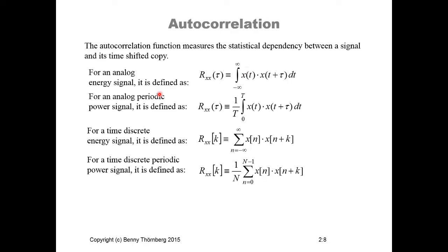For an analog periodic power signal, it is defined in a similar way as the product of x(t) multiplied with x(t + τ). Now we are integrating over the period of this periodic signal from zero to T, and we are dividing by the period T. We have similar definitions for time-discrete energy signals, but now we use k for the number of samples as the difference between the shifted copies, and n as the number of samples for the period.